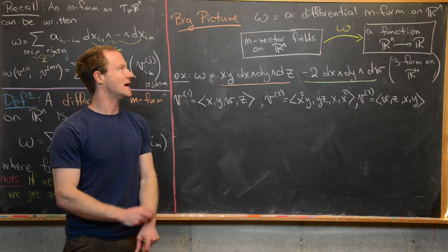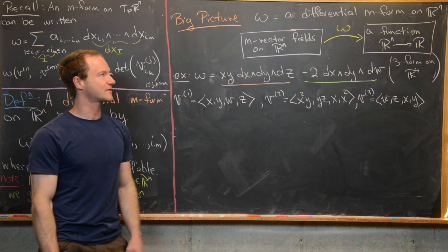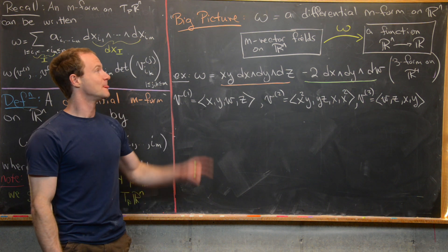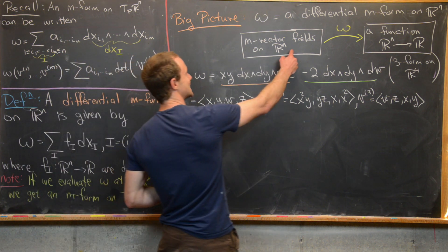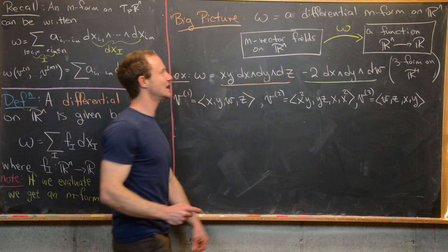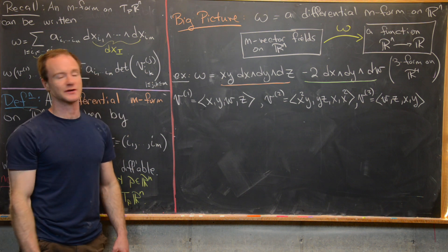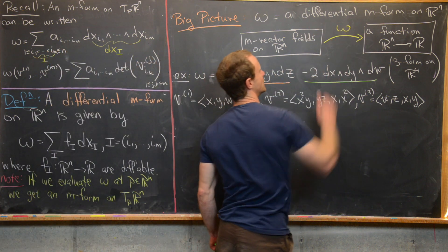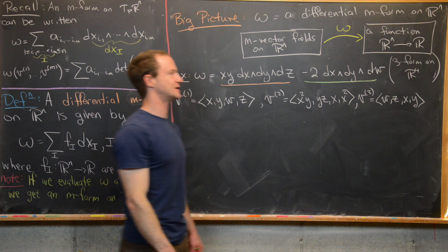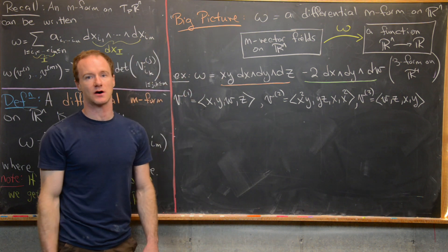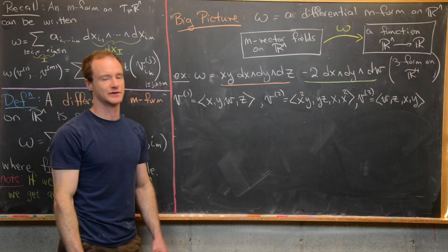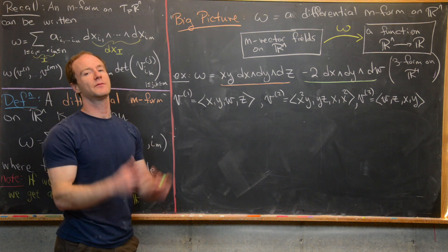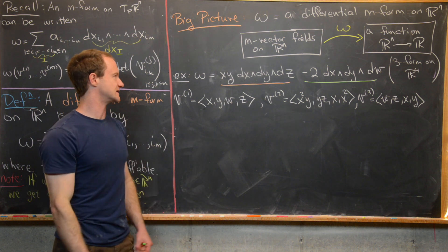The bigger picture: if omega is a differential M-form on R^n, it accepts M different vector fields on R^n as inputs, and its output is a scalar function from R^n to R.